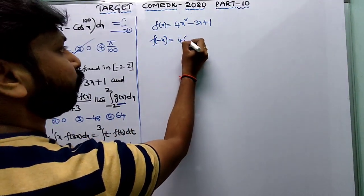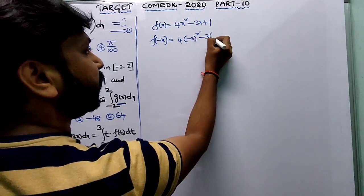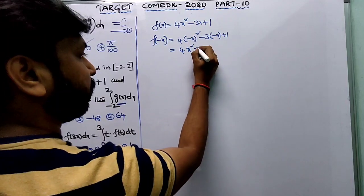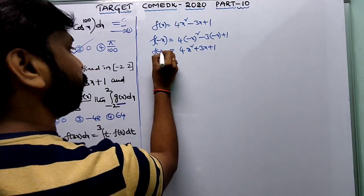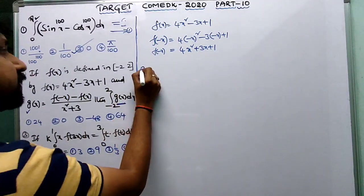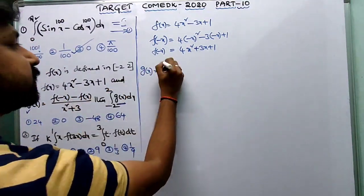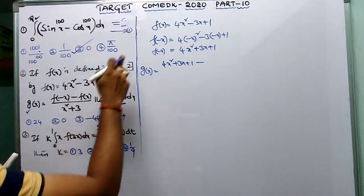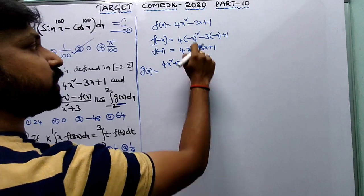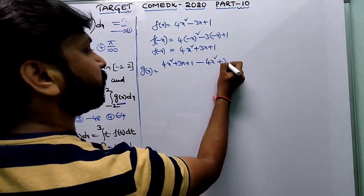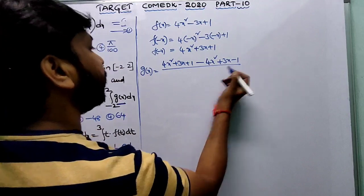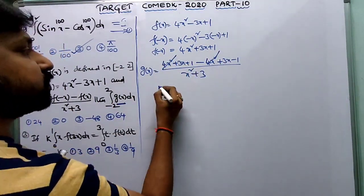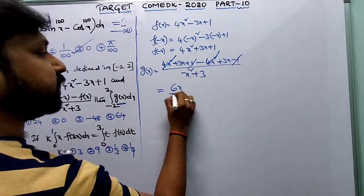Substituting minus x for x: f(minus x) = 4(minus x)² minus 3(minus x) plus 1 = 4x² plus 3x plus 1. Now g(x) = f(minus x) minus f(x) = (4x² + 3x + 1) minus (4x² minus 3x + 1). The 4x² terms cancel and the constant terms cancel, leaving g(x) = 6x.